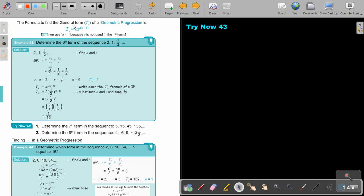The formula to find the general term of a geometric progression is tn equals ar to the n minus 1, because the first term is not having an r. So if it's 1 minus 1, anything to the power of 0 is 1, not 0, and 1 times a will just be a. We use n minus 1 because r is not in the first term. Now let's look at an example.